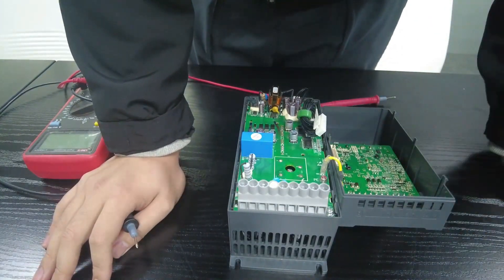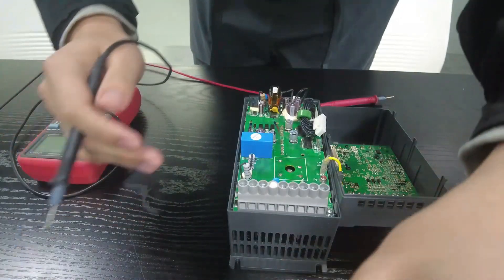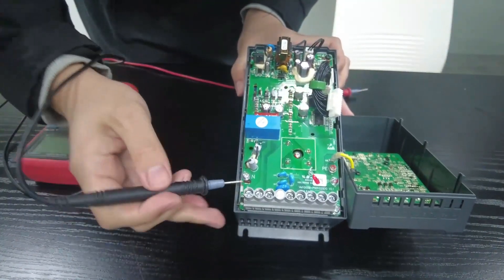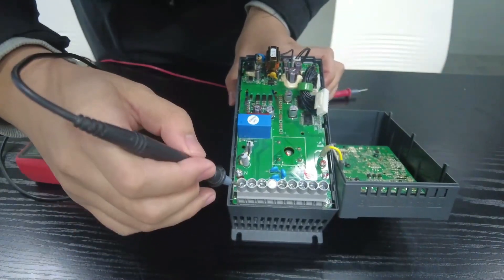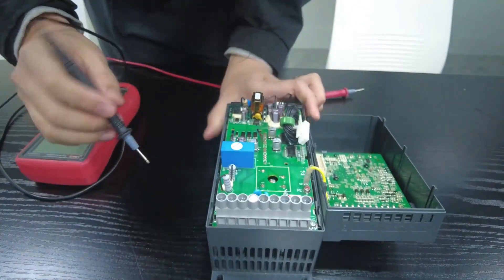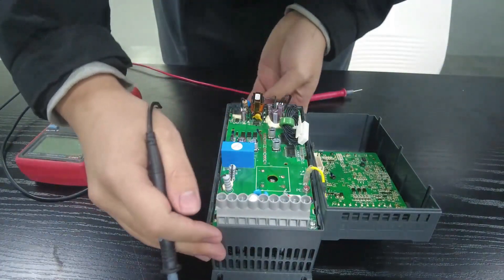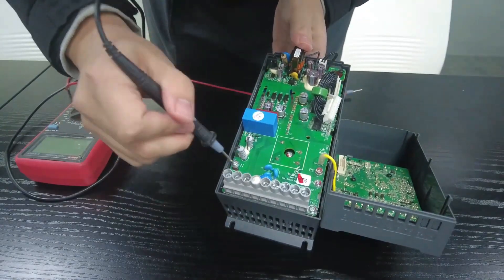After disassembling the shell, we must first find the positive and negative terminal of the inverter. After finding the positive and negative terminal, let's test the inverter rectifier bridge first.